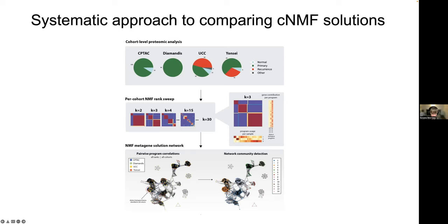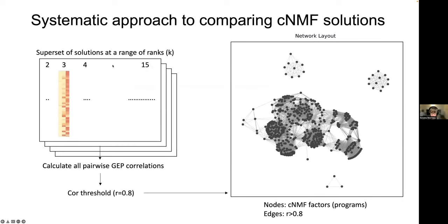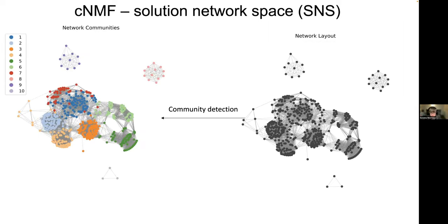We then take all these gene expression programs and perform pairwise correlations to build a network of highly similar programs across all data sets. We put all the distinct biological programs into the same mix, make a network, and see how it looks. The network has structure — we can find communities within it. We restricted to programs correlated with something else at a threshold of 0.8, and from that set made a network based on similarity. Programs not correlated with anything else at other ranks or data sets are not shown and considered not relevant. We perform community detection on this network — in this case finding 10 different communities.